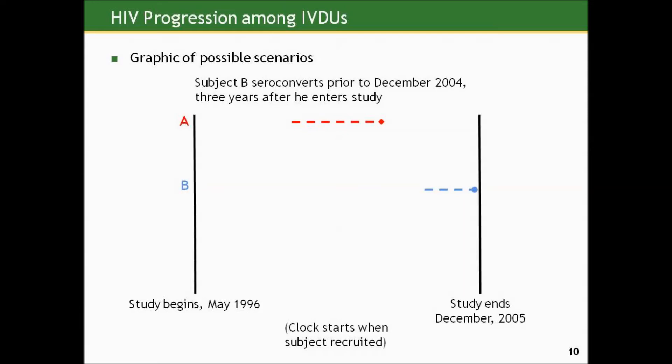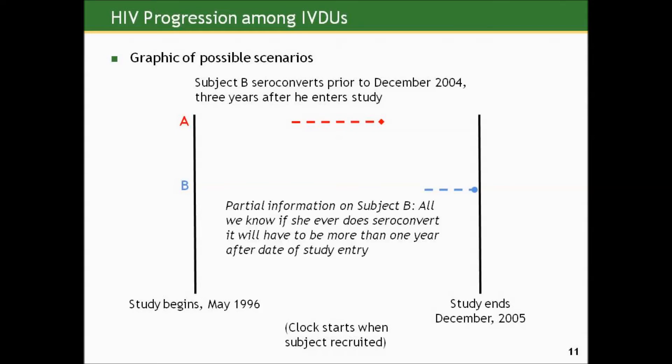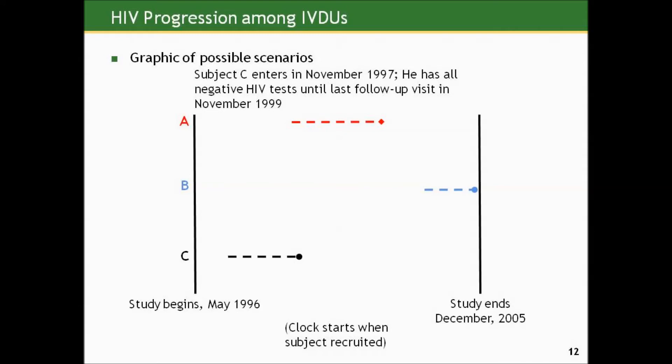Subject B, however, enters in December 2004 and does not seroconvert by the end of the study. All we know is that if she ever does seroconvert, it will have to be more than one year after the date of study entry. At our last observation when the study ended, she was still HIV negative. We don't know if she'll go on to seroconvert after that point. We have a partial piece of information on her — if she seroconverted, it had to be at more than one year from her entry into the study.